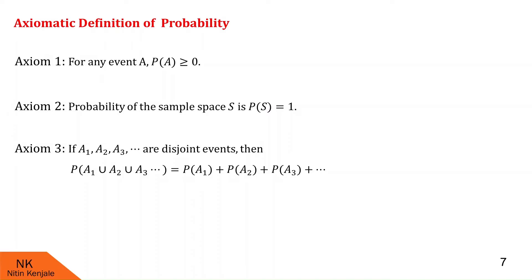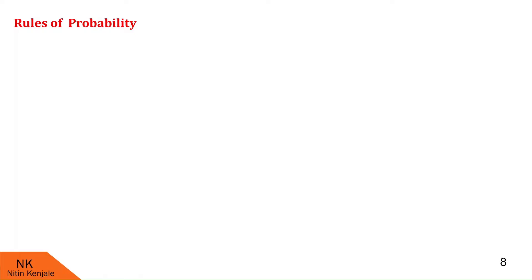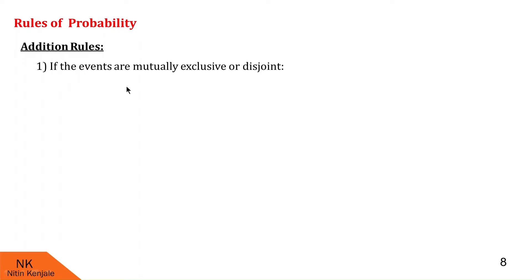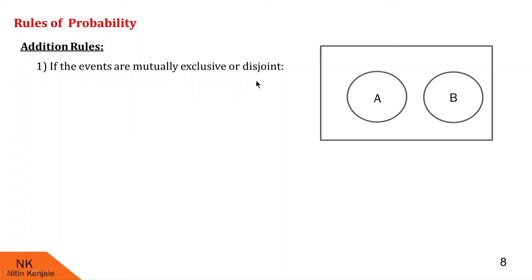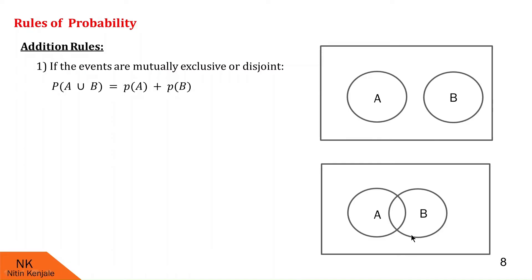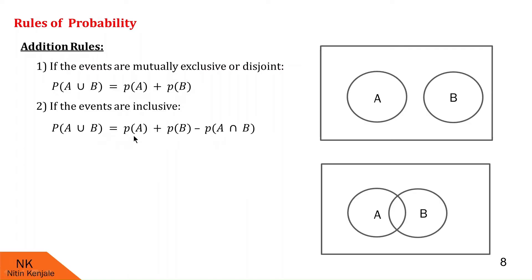Now let us see some rules of probability, including the addition and multiplication rules. The first addition rule says: if events are mutually exclusive or disjoint, then probability of A union B equals probability of A plus probability of B. As shown in the Venn diagram, when A and B are mutually exclusive, there is nothing common between them. For inclusive events — where A and B share a common part — probability of A union B equals probability of A plus probability of B minus probability of A intersection B.